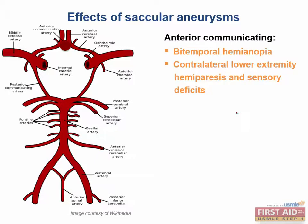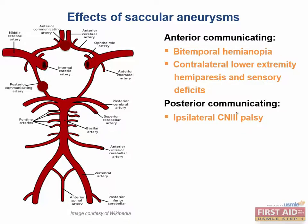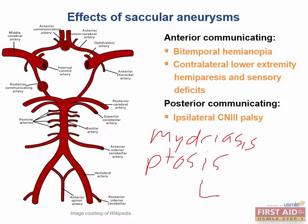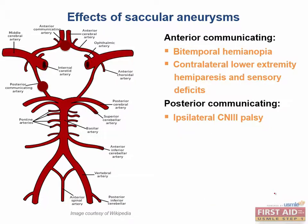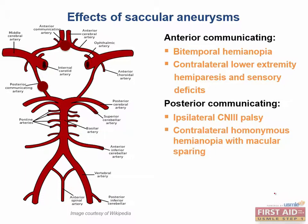Another common place one would find an aneurysm is the posterior communicating artery. An aneurysm here would lead to an ipsilateral cranial nerve 3 palsy. The signs of a cranial nerve 3 palsy are mydriasis, ptosis, and a down-and-out eye. Ischemia in the distribution of the PCA would also lead to a contralateral homonymous hemianopia with macular sparing.